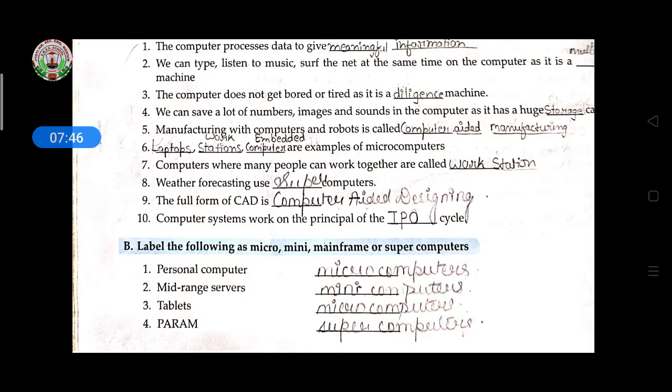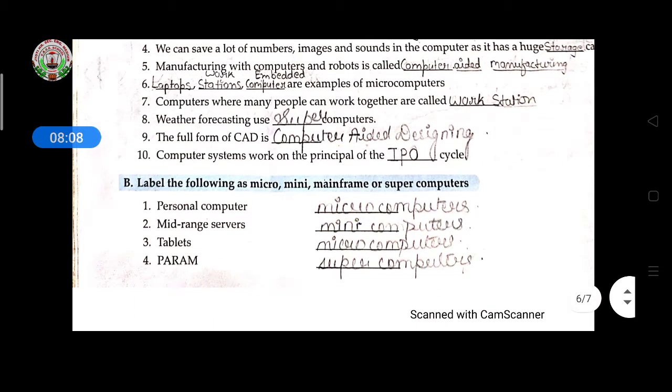Manufacturing with computer and robots is called computer aided manufacturing. Laptops, workstation, embedded computers are examples of microcomputers. Computers where many people can work together called workstation. Weather forecasting uses supercomputer. The full form of CAD is Computer Aided Designing. Computer system works on the principle of IPO system. Label the following as mini, micro, mainframe or super: personal computer is microcomputer, mid-range server is mini computer, tablets microcomputer, Param supercomputer.